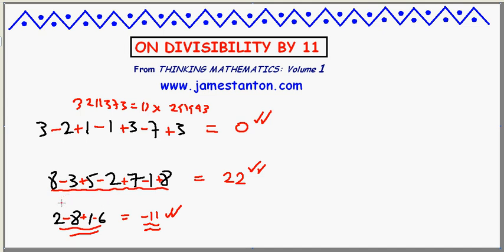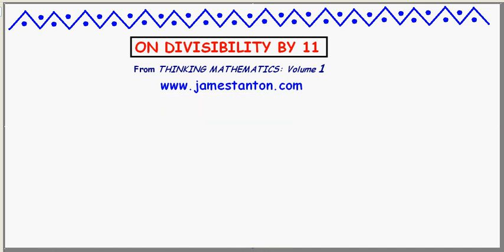Alright, why on earth would that work? What has the alternating sum of the digits got to do with divisibility by 11? Well, the answer comes from the fact that we work with a base 10 number system. So, let's look at the powers of 10, on which our numbers are based.